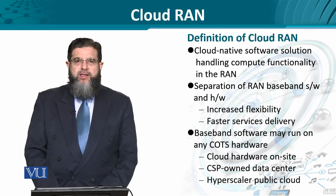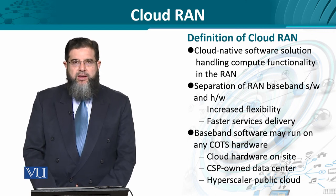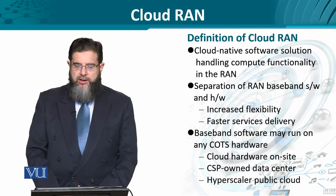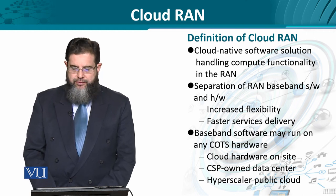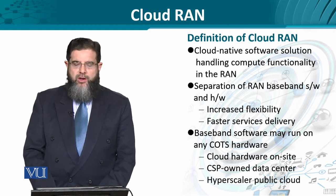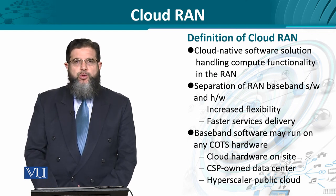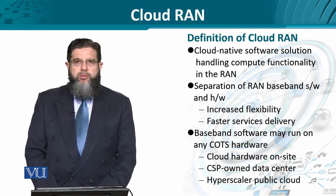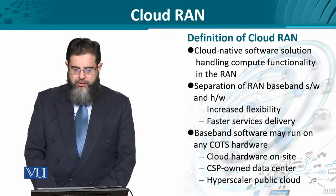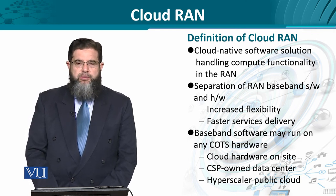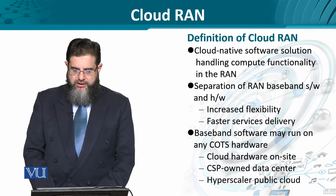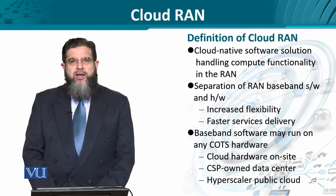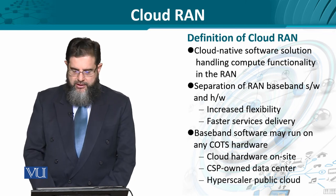Cloud-RAN is essentially the splitting of the hardware and software which was considered to be monolithic in RAN. This cloud-native software implementation of the RAN functionality, decoupled from the hardware, results in some intuitive advantages — including flexibility and faster service delivery. The functionality which was otherwise performed as baseband signal processing through software would now run on any commercially off-the-shelf available hardware.